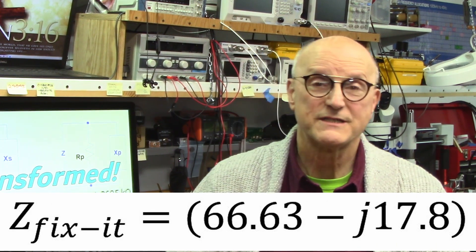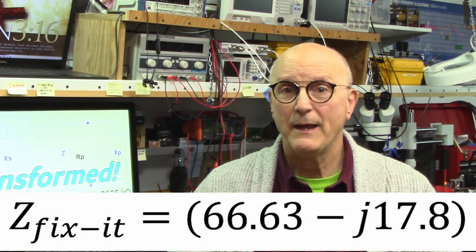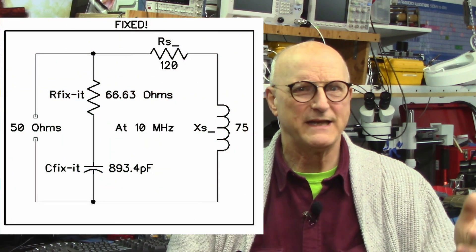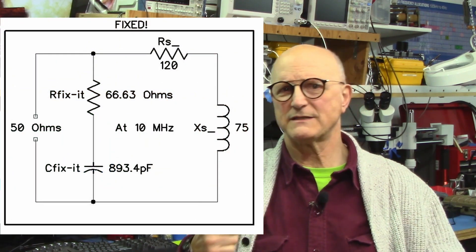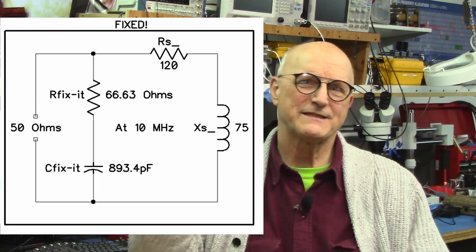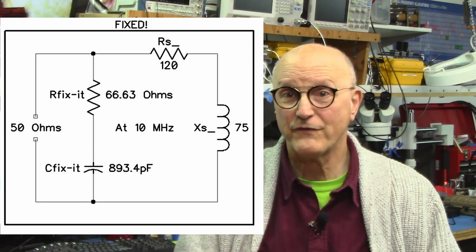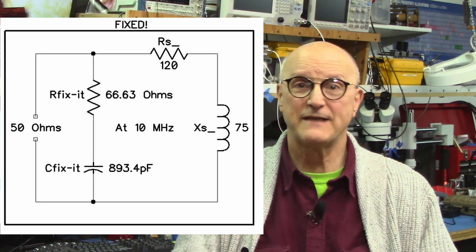In the case of my example, I came up with a fixed impedance of 66.63 minus J17.8. That means that I would have a 66.63 ohm resistor in series with an 893.4 pF capacitor at 10 MHz.